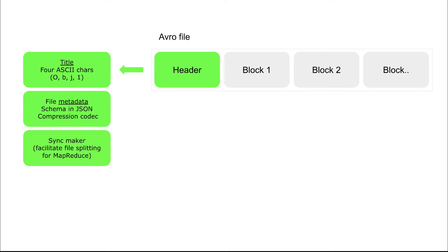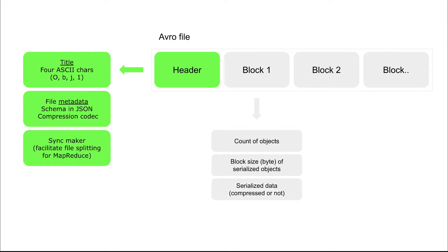Avro has been around for a while and was used heavily in the big data MapReduce days. Within the blocks, each block has a number of things: the number of objects within that block, the size of that block in bytes — which is the size of the serialized objects — the data itself in serialized format which can be compressed or not, and a sync marker at the end. The sync markers at the end of the header and at the end of each block help facilitate file splitting between header, block one, block two, and so on.